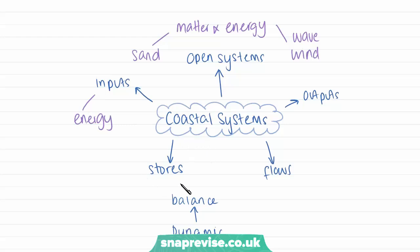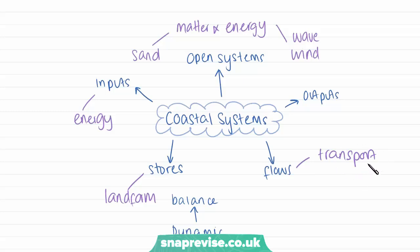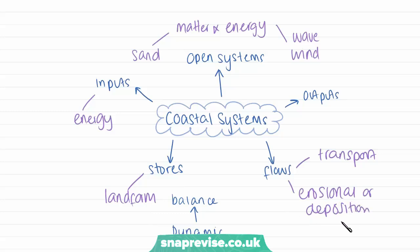For our components or stores, these are things like our landforms — landforms of erosion and landforms of deposition. We also have flows, and our flows will be things like wind or water transport. This is when the wind or water is transporting our sediment and creating landforms, but we also have flows such as erosional or depositional processes. Finally, the outputs we might find in a coastal system include the accumulation of sediment or the dissipation of wave energy.